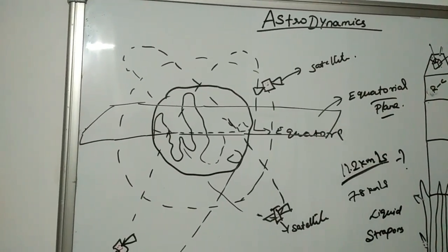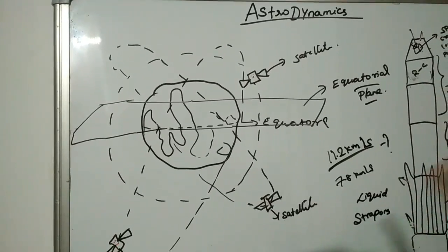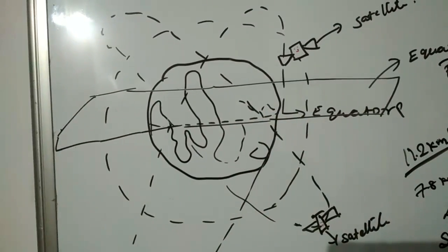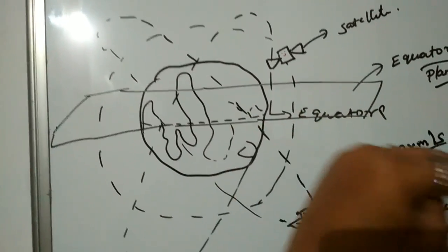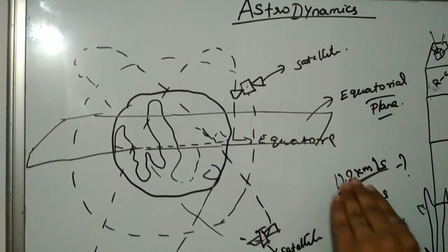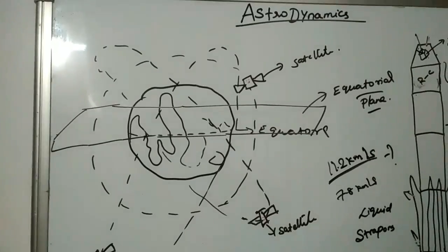We have learned an important aspect today, that is the equatorial plane. We have an equator around the center of the Earth. If you cut a plane in the horizontal direction, that is known as the equatorial plane. These are used while designing the orbital path.